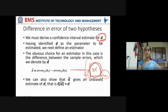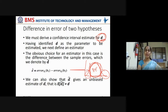Having identified D as the parameter to be estimated — in previous cases the parameter of interest was the true error, or the weight of a student, or the mass of a student — these are all called parameters of interest. We are trying to find within which range that parameter falls based on the confidence interval. Now, the difference between the true errors of hypothesis H1 and H2 is our parameter of interest to be estimated.